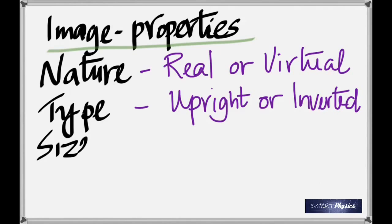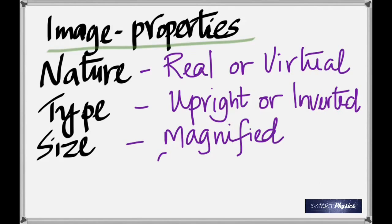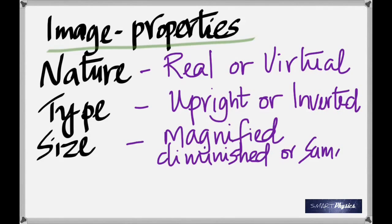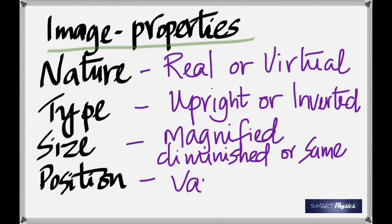Size of the image — there are three possibilities: magnified (which means bigger), smaller, or same size. And the position of the image can be at different points. So basically when you look at any image, there are four properties: the nature, the type, the size, and the position.